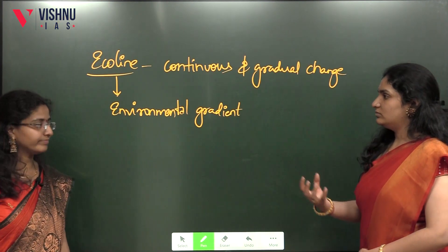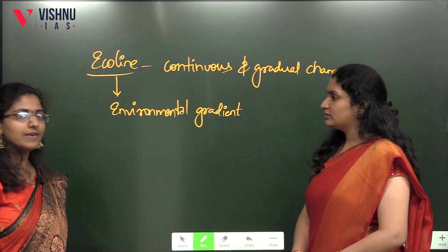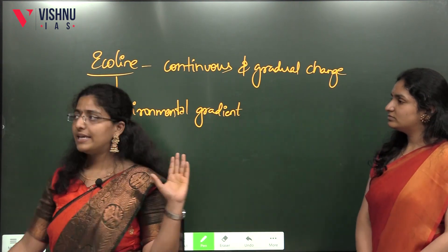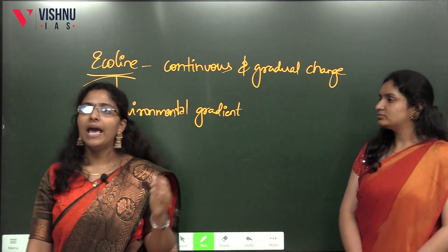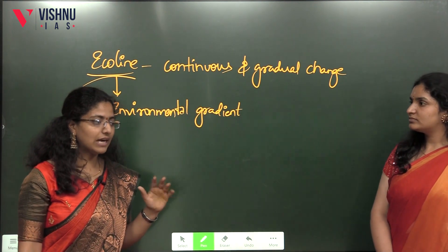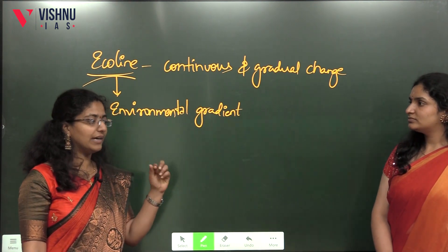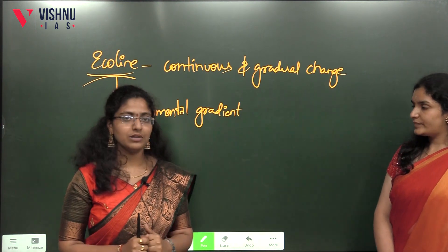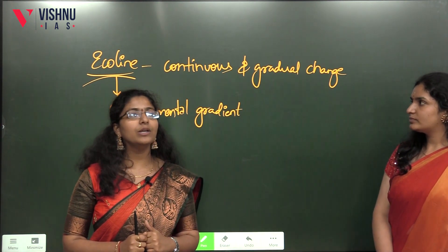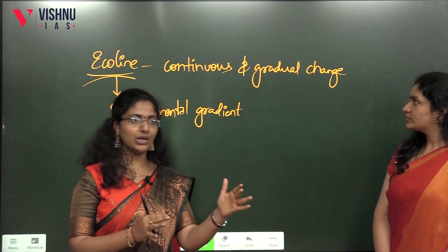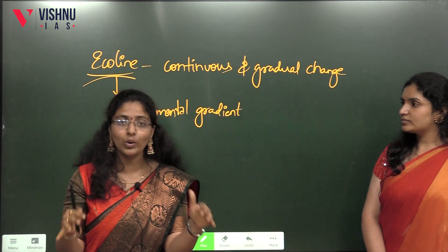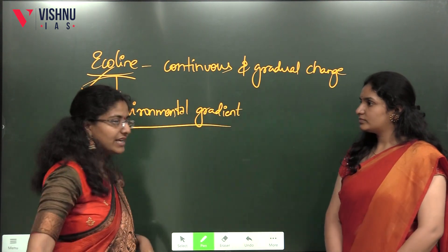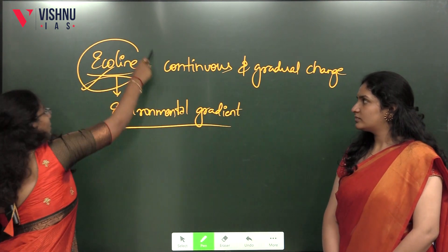Ecotone is a gradually and continuously transitioning zone between two ecosystems. For example, the transition zone between a coastal ecosystem and a terrestrial ecosystem is called an ecotone. It is essentially an environmental gradient.